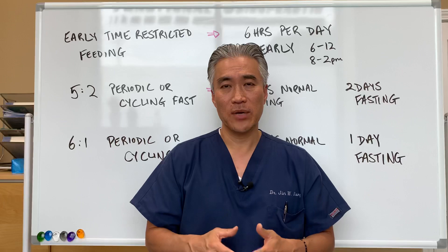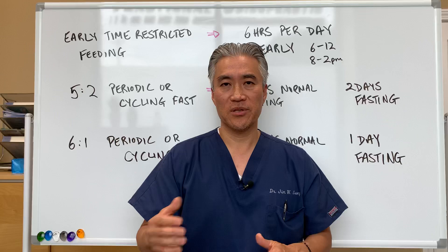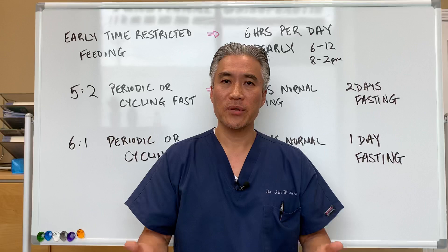Their fasting window might be short in the beginning — maybe a 12 and 12, where they're eating 12 hours and fasting 12 hours — and then gradually change the ratio to a different level. Hypoglycemic patients need to be careful.